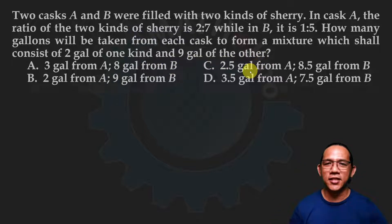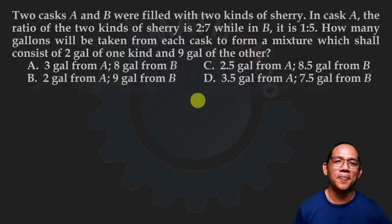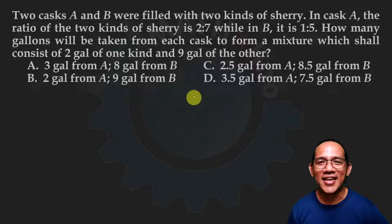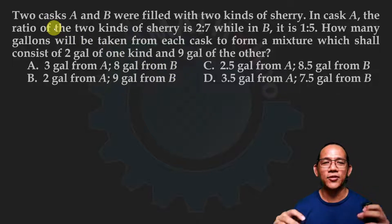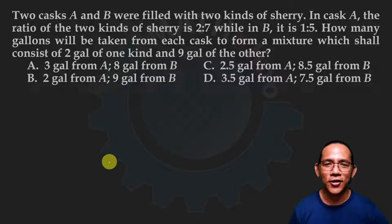So we'll create a mixture that will consist of two gallons of one kind of sherry and nine gallons of the second kind of sherry out from these two kinds. We have two types of sherry here. Let me illustrate our cross section.